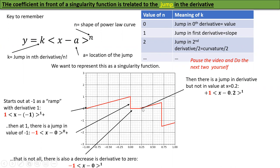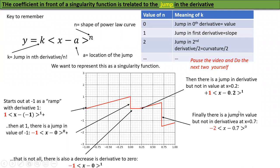At x=0.2 there is no jump in value, so there's no ⟨x⟩^0 term. There is a jump in slope: it goes from zero slope back up, so we add +1·⟨x−0.2⟩^1. The coefficient is +1 because that is the slope of the rising section. Then finally at x=0.7 there is a jump in value but not in slope — the slope is the same on both sides — so we add −2·⟨x−0.7⟩^0. Study this carefully and learn how each jump is handled.